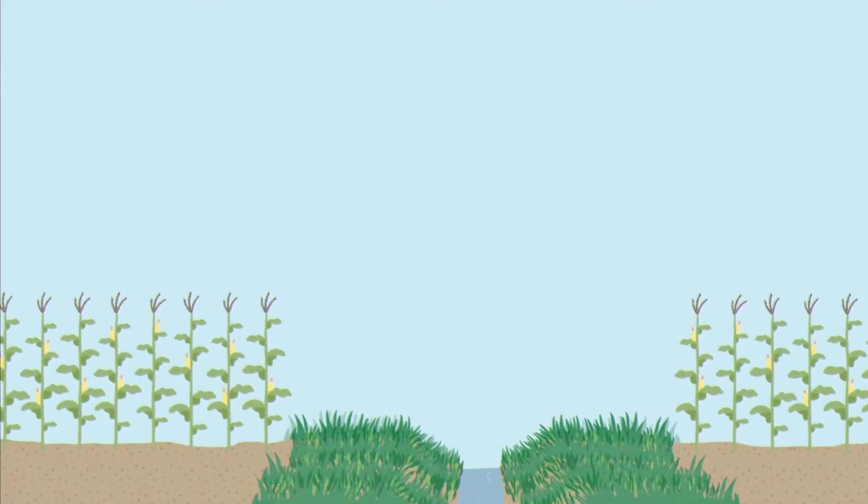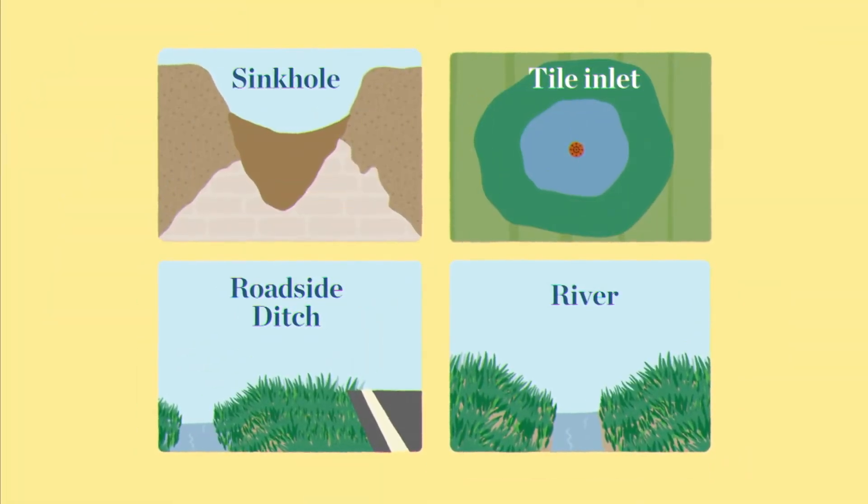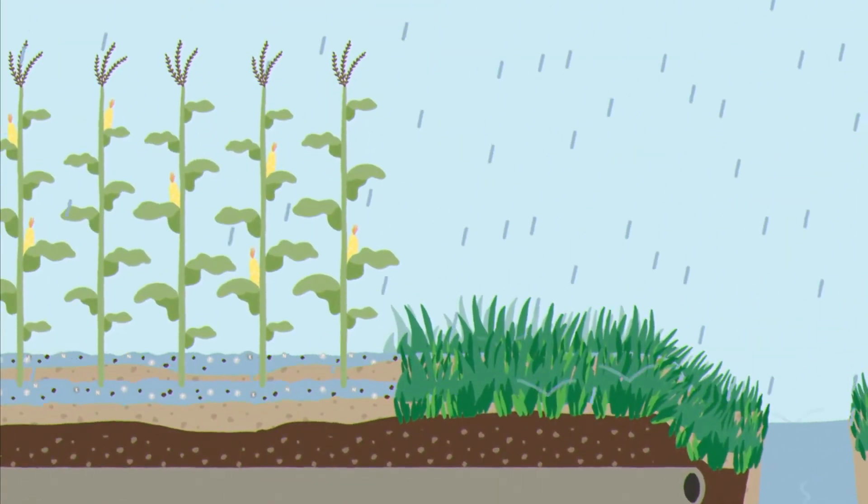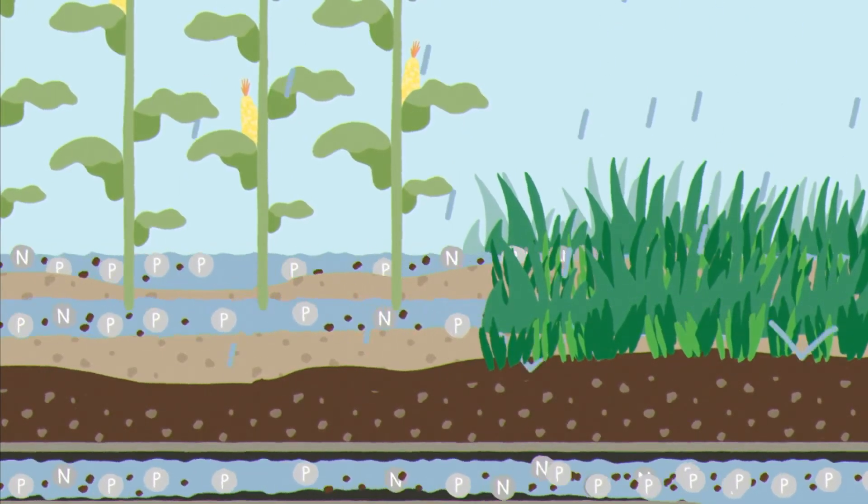Buffer strips are areas of permanent vegetation bordering a river, ditch, sinkhole or tile inlet or any other environmentally sensitive area. The buffer is efficient at intercepting and filtering out soil particles which have phosphorus or other nutrients attached.